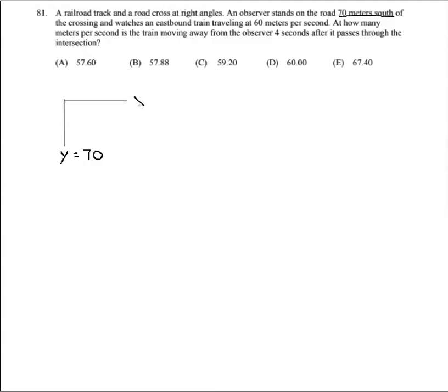And for x, well we know that the train is traveling at 60 meters per second for four seconds. 60 times four is going to be 240.